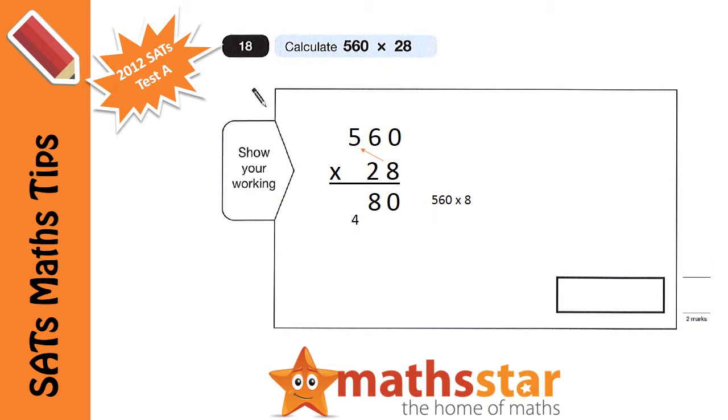Then 8 times 5 equals 40, plus the 4 that we carried makes 44. Now, don't forget to cross out the 4 that you carried so it doesn't confuse you later on.